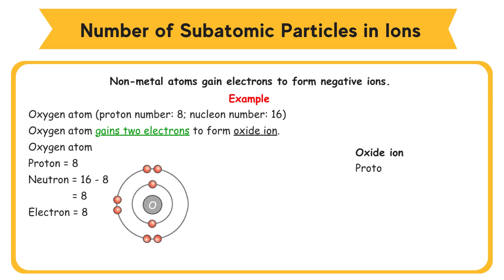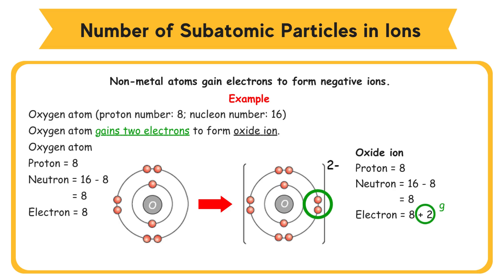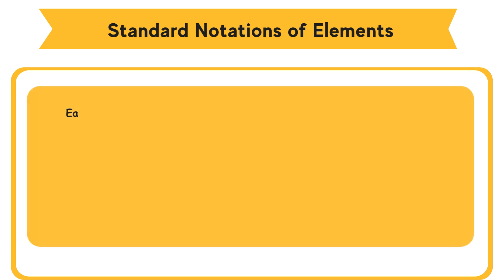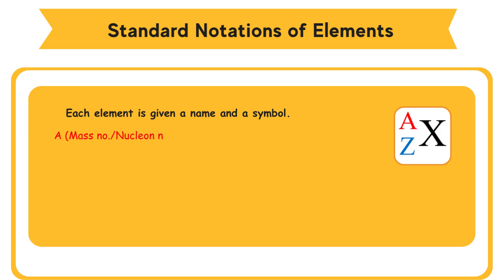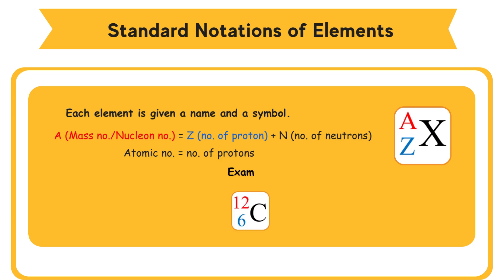In the oxide ion: protons = 8, neutrons = 16 − 8 = 8, electrons = 8 + 2 = 10. For element notation, the mass number (nucleon number) equals Z plus N (number of neutrons), and the atomic number equals the number of protons. For example, C-12 has symbol C, mass number 12, and proton number 6.